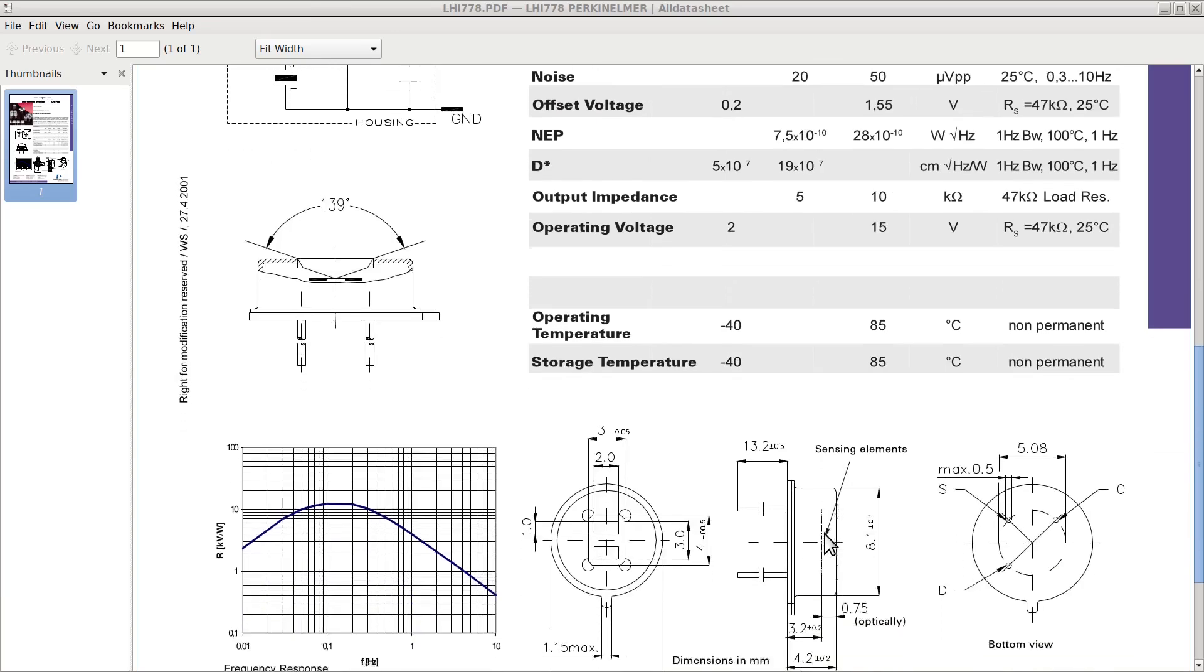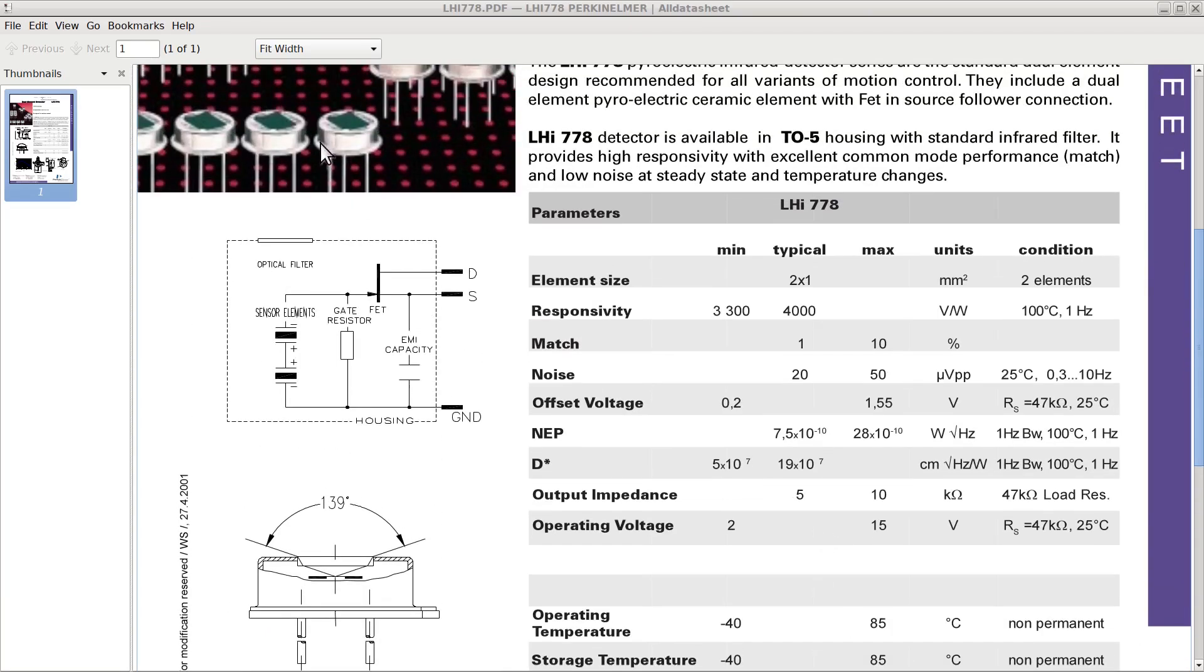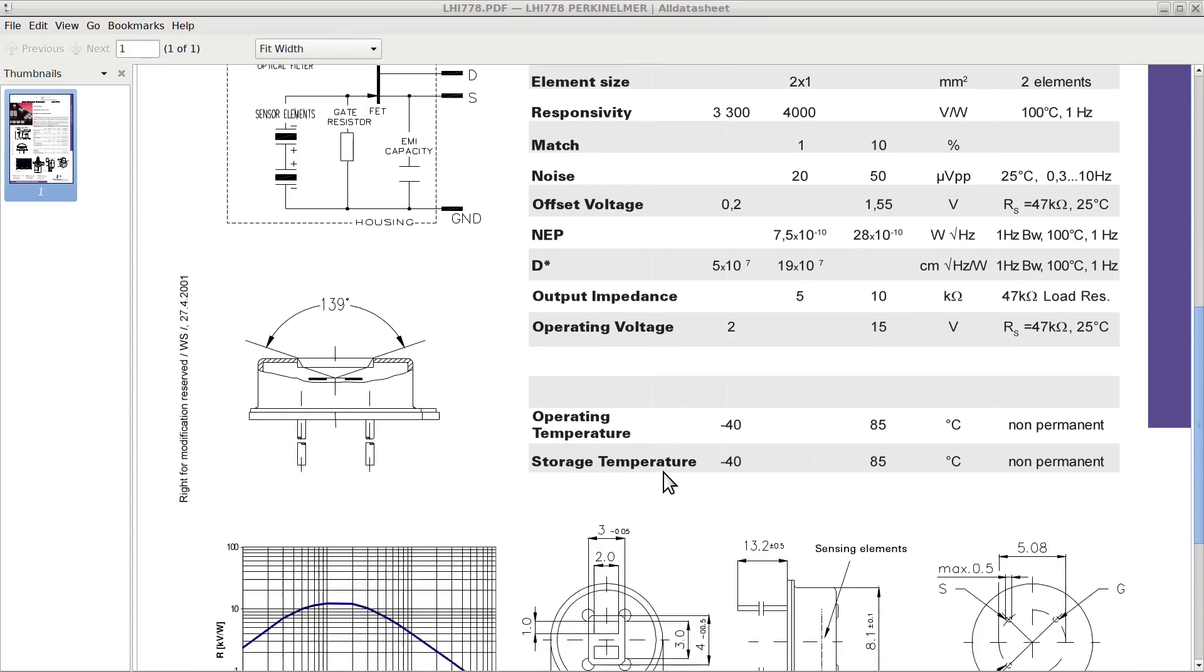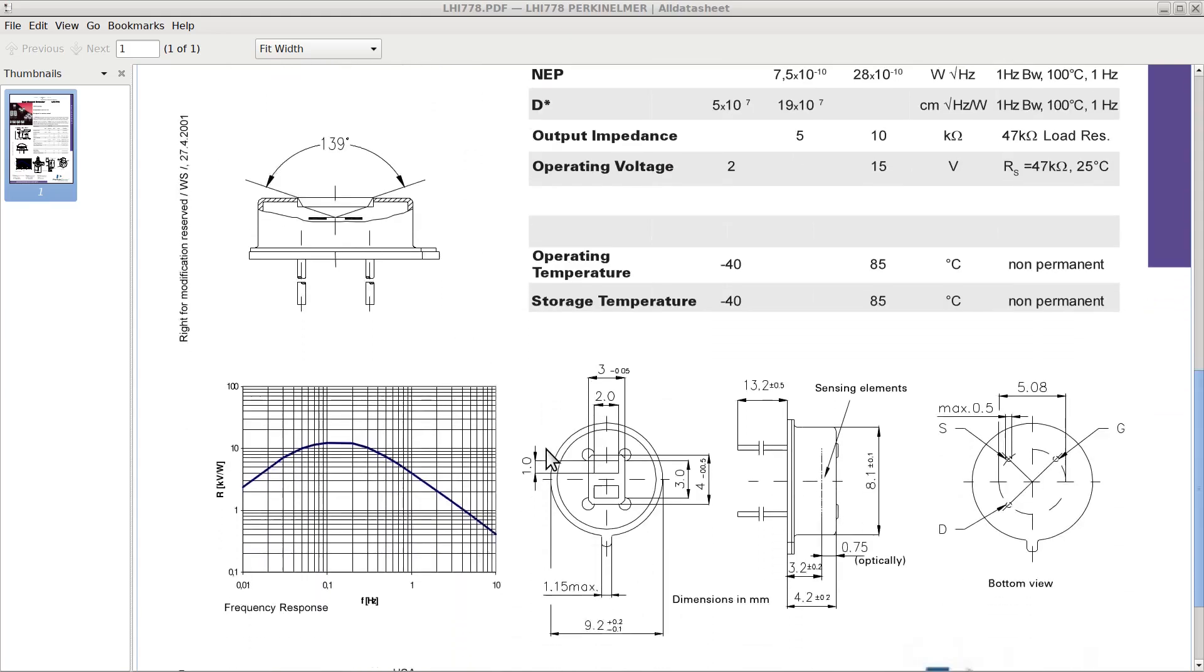You can see from its datasheet that it's like a small metallic cylinder with four pins coming out of it. This PID actually contains two infrared sensors connected in series to increase its sensitivity.